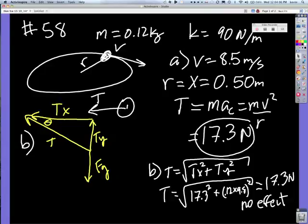Okay, 58. If you look on number 58, there's a ball connected to a rubber band that's being swung in a horizontal circle. The ball has this velocity, the rubber band has this k value, and the mass is this.